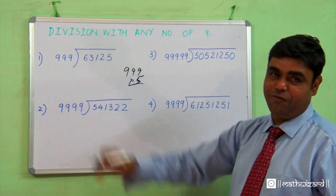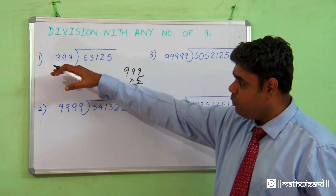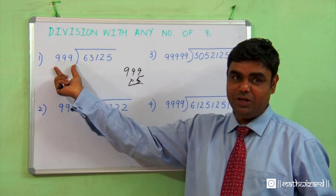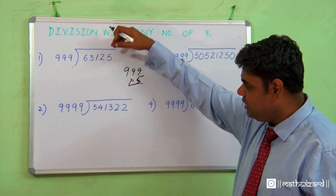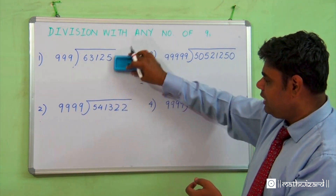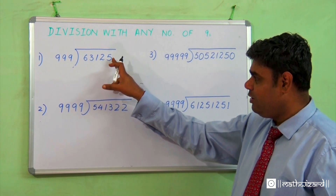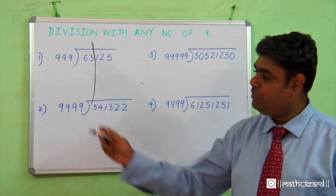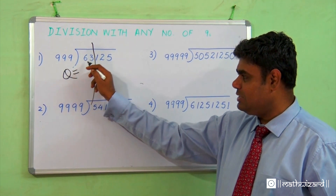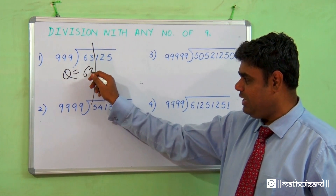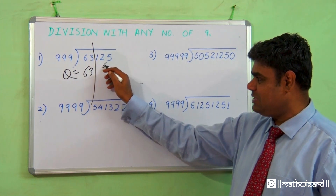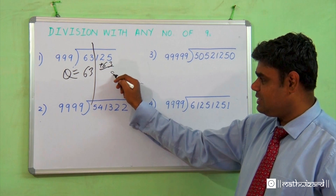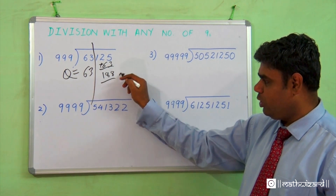See the beauty of Vedic maths. This trick works with numbers like 999. How many nines are there? Three — so I simply count three digits from behind: one, two, three. My quotient is 63. I take the 63, bring it to this side and add it up — it gives me my remainder, which is 188.